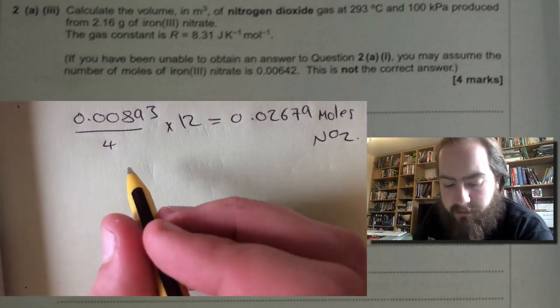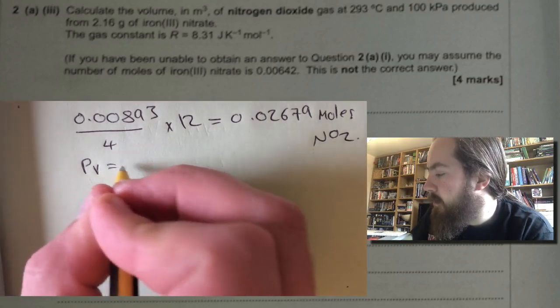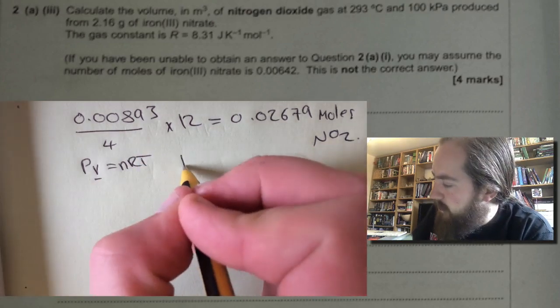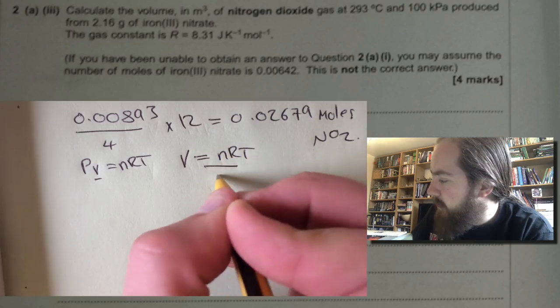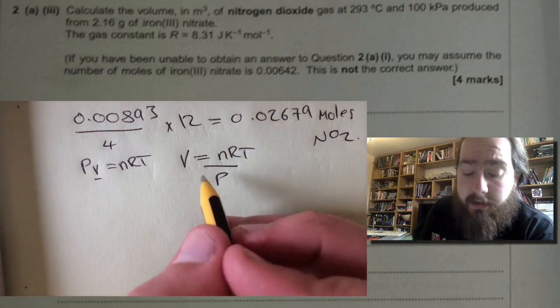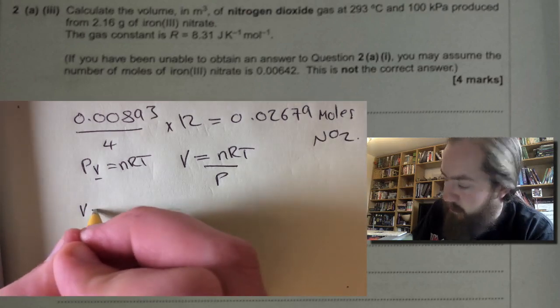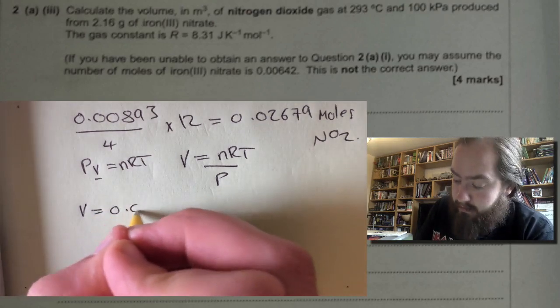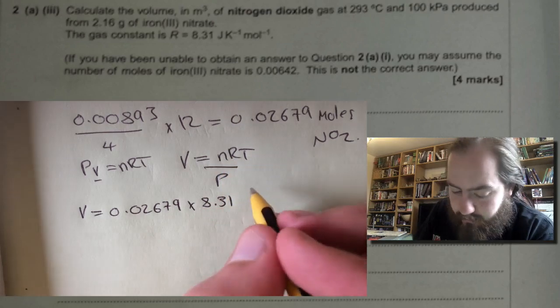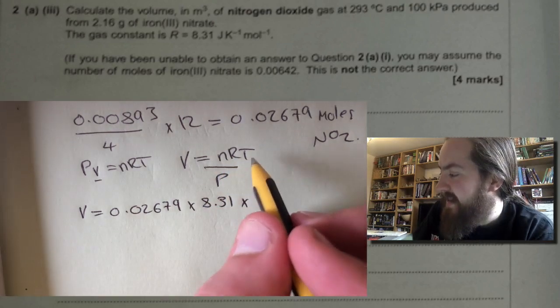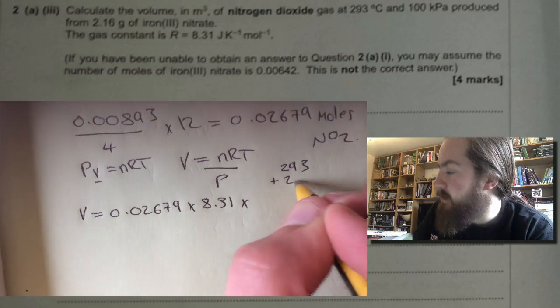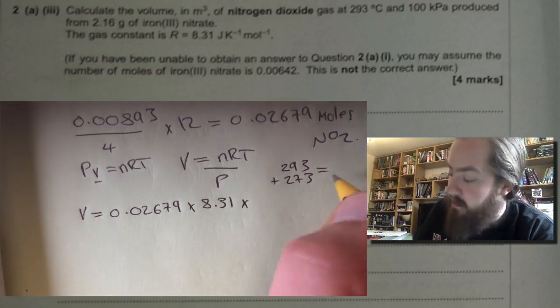We then are going to use PV equals NRT, and if you write this down you usually get a mark. We've got to rearrange it actually—we're trying to work out volume, so we get volume equals NRT divided by P. And we need to put everything into that formula making sure that we've got the standard units. So volume equals 0.02679 times 8.31, that's the R that's given in the question, times the temperature in Kelvin. Now to work out the temperature in Kelvin we need to do 293 Celsius plus 273, and that will give us an answer of 566.